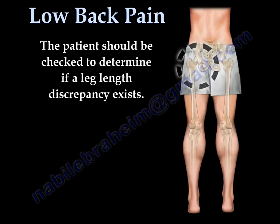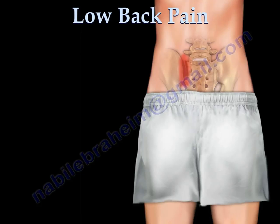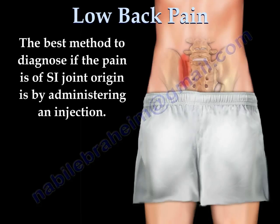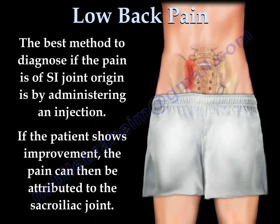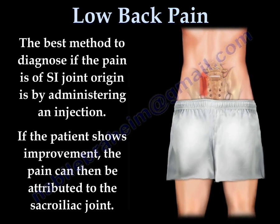The patient should be checked to determine if a leg length discrepancy exists. The best method to diagnose if the pain is of SI joint origin is by administering an injection. If the patient shows improvement, the pain can then be attributed to the sacroiliac joint.